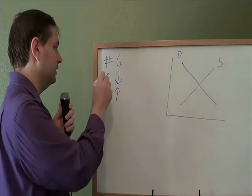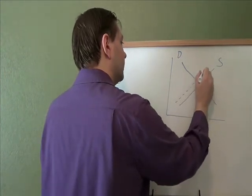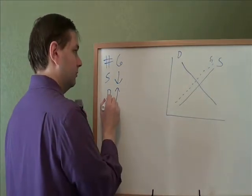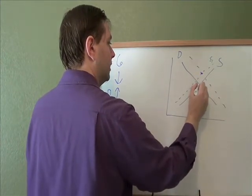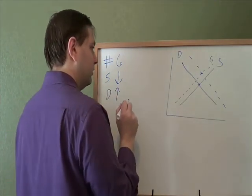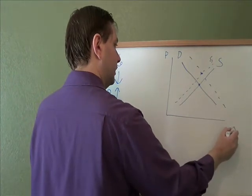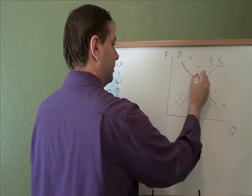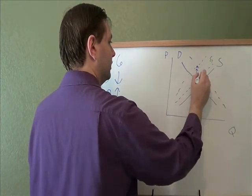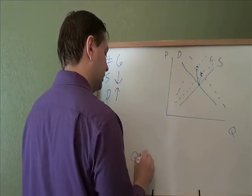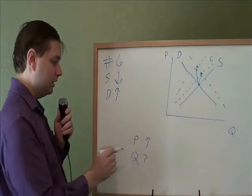Problem six: what happens when supply decreases and demand increases? A decrease in supply means you move to the left. An increase in demand means the demand line shifts to the right. We've gone from the old equilibrium to the new one. When you have two movements, you only know one thing — overall the price went upward, so our price has increased. The quantity is indeterminate, because depending on how big the supply movement was, the quantity could go either left or right. So price increases and quantity is indeterminate.